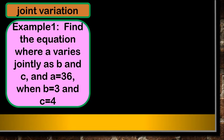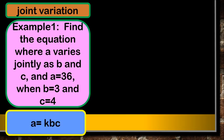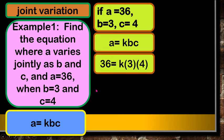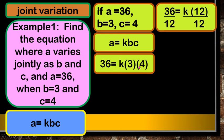Example one: find the equation where A varies jointly as B and C, given that A is 36 when B is 3 and C is 4. First, translate into the equation: A equals k times B times C. Next, substitute the values — A is 36, B is 3, C is 4 — into this equation. So we have 36 equals k times 3 times 4. Multiply 3 and 4 to get 12, giving us 36 equals k times 12.